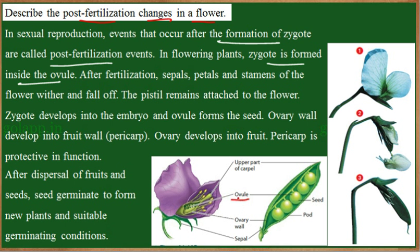Inside the ovule, the embryo sac is present and the egg cell would be present. So all fertilization occurs inside the ovule. After fertilization occurs, the changes which occur in the flower would be as follows.